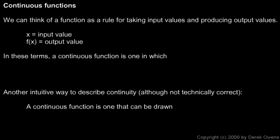Imagine some graph — you put in an x value and you get out a corresponding value of f(x), and that x value and that y value correspond to a point on the graph. A continuous function is one in which small changes in the input result in small changes in the output. If I'm at an x value and I move just a little bit to the left or to the right, changing my x value only a little bit, then I'm only going to change my y value a little bit.